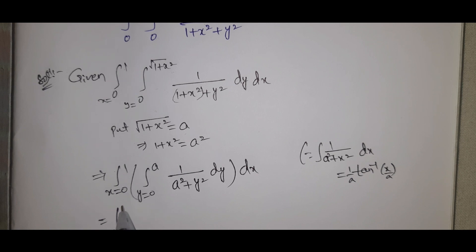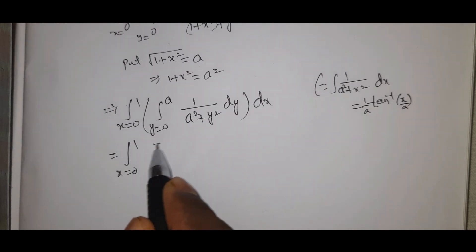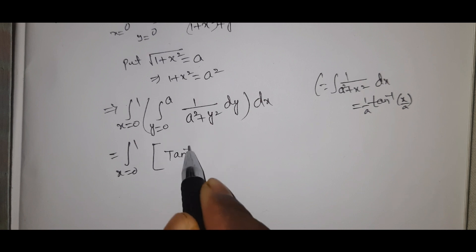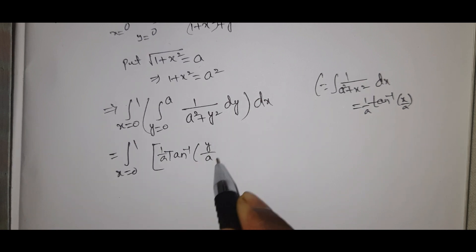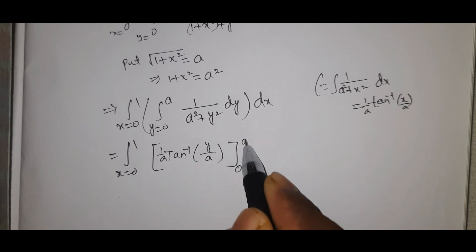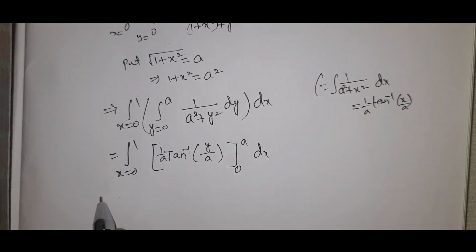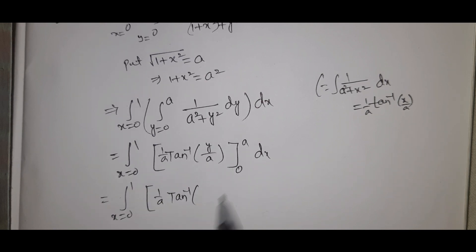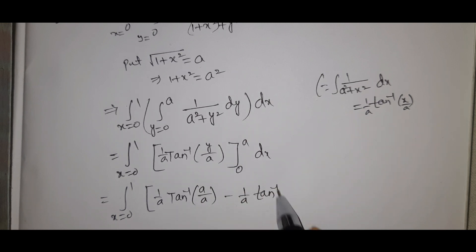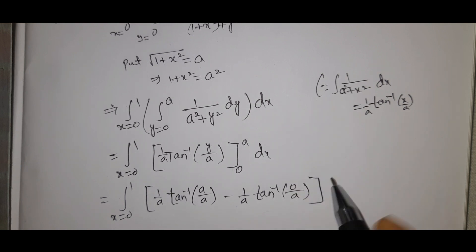Applying the formula, we get: integral from x=0 to 1 of (1/a) tan⁻¹(y/a) evaluated from y=0 to a, dx. Substituting the upper limit gives (1/a) tan⁻¹(a/a), and the lower limit gives (1/a) tan⁻¹(0/a) = 0.